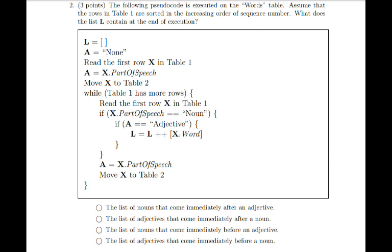Now, while table 1 has more rows, we read the first row X in table 1. If the part of speech of this row is a noun, we then check if A, which was the part of speech of the previous row, was an adjective. And then we take the word in the current row and append it to the list L.